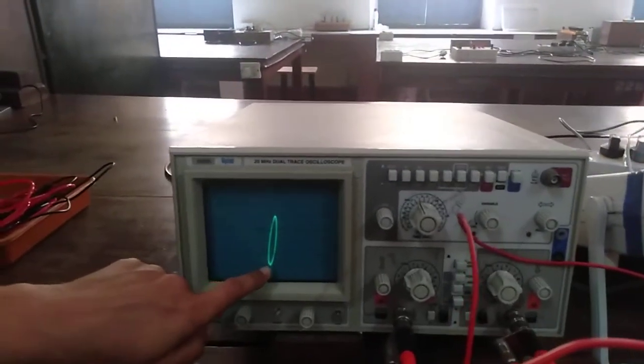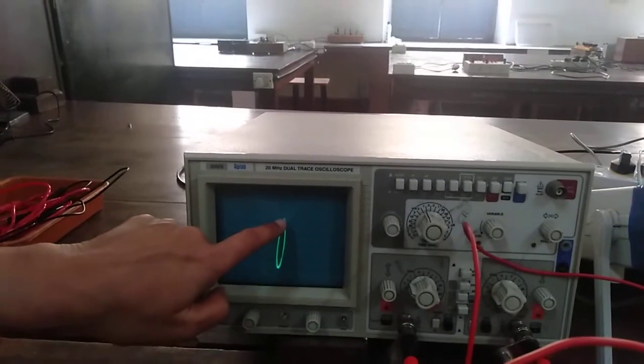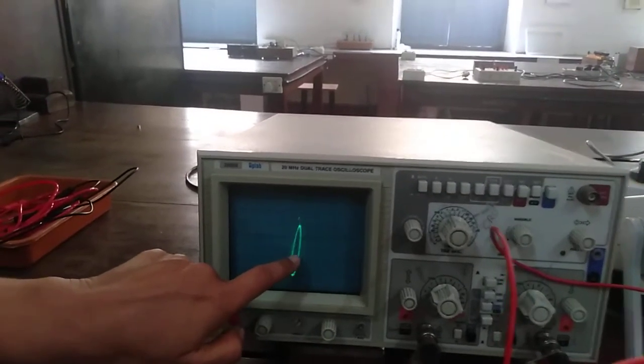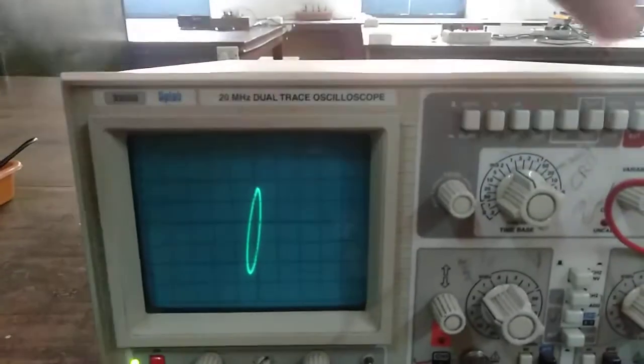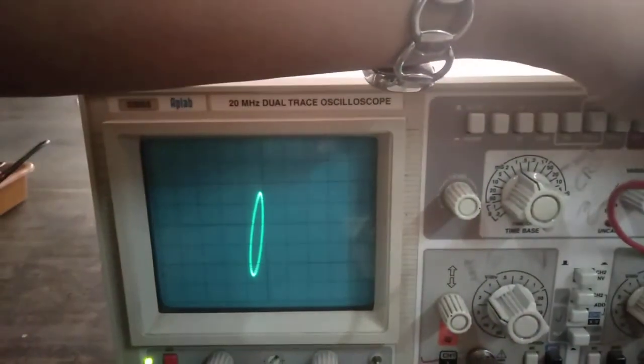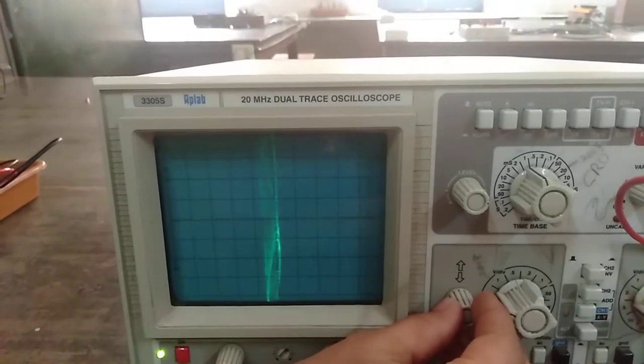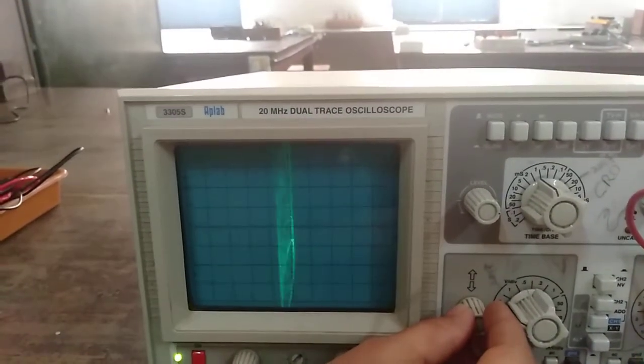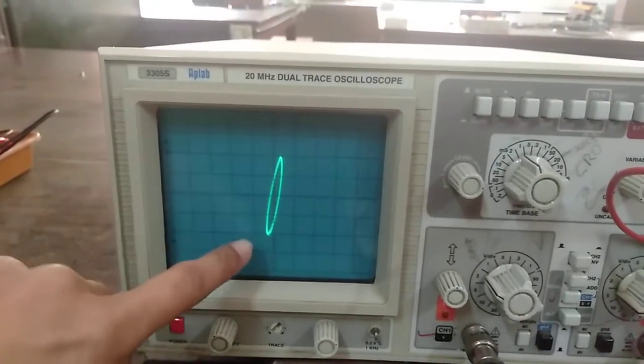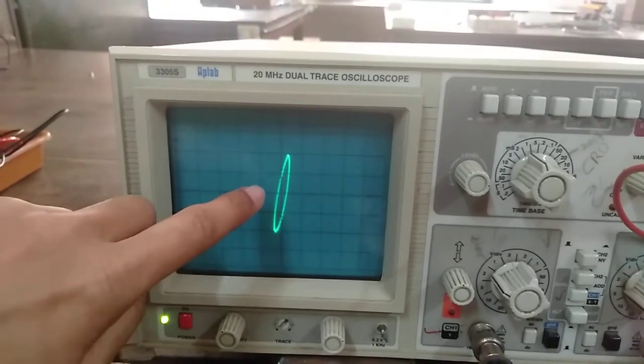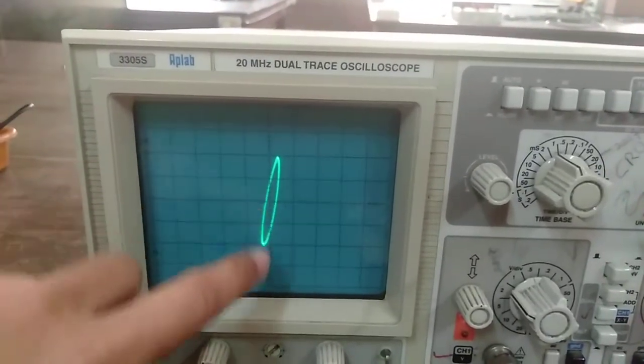Now, you can measure the value of D from this end to this end. It comes around 1, 2, 3, 4. The value of D here is 4 and you can measure the value of C where exactly it cuts the Y axis.